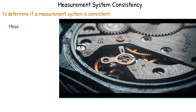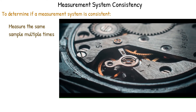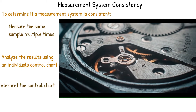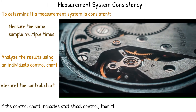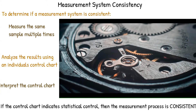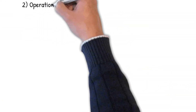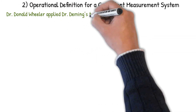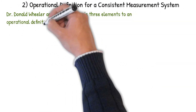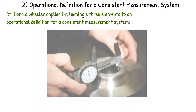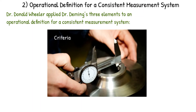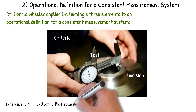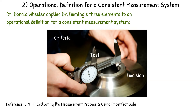A good operational definition enables everyone to use and understand a term in the same way every time. So let's talk about how to determine if a measurement system is consistent. You're going to measure the same sample multiple times, analyze the results using an individuals control chart, and then interpret the control chart. If the control chart is in statistical control, then your measurement system is consistent. This comes from Dr. Wheeler, who applied Dr. Deming's three elements to an operational definition for a consistent measurement system. For more information, see EMP3 by Dr. Wheeler.